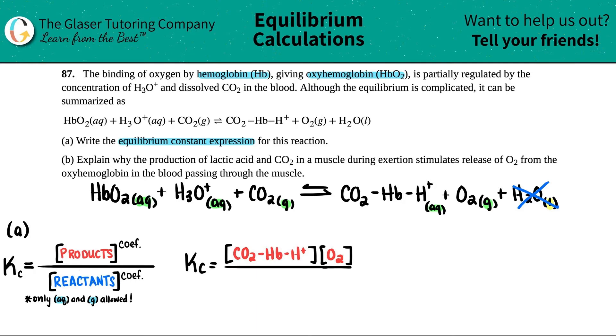And now I go with the three concentrations of the products. So they all have to be multiplied. Remember in a Kc expression, your multiple reactants or products will be multiplied by each other. So I have HbO2 times by H3O+ times by the concentration of CO2.